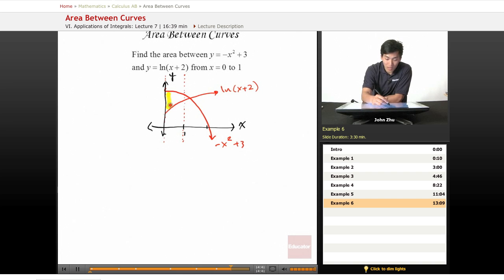So that becomes our f of x, negative x squared plus three. So this is a region we're looking for. Let's make this really focused here. It's this little tiny chunk right here. This is the area we're looking for.